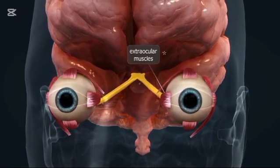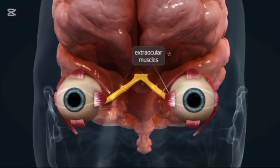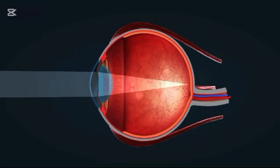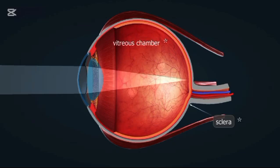Extraocular muscles are six tiny muscles around the eye that control its movement. They allow us to look up, down, side to side, and even rotate our eyes. These muscles work together with incredible precision, enabling smooth and accurate eye movements.